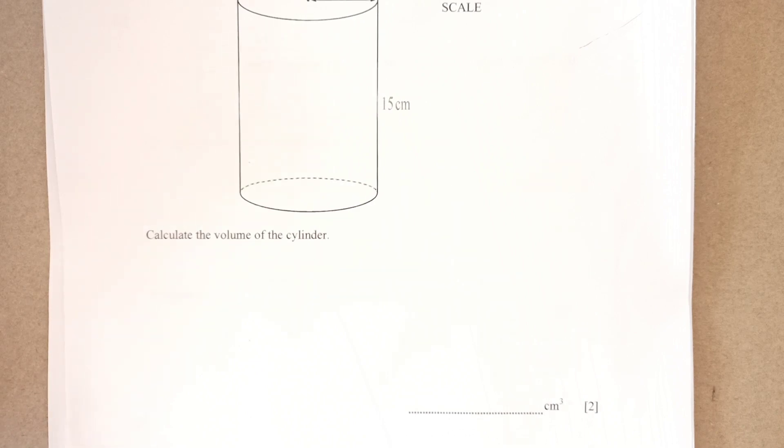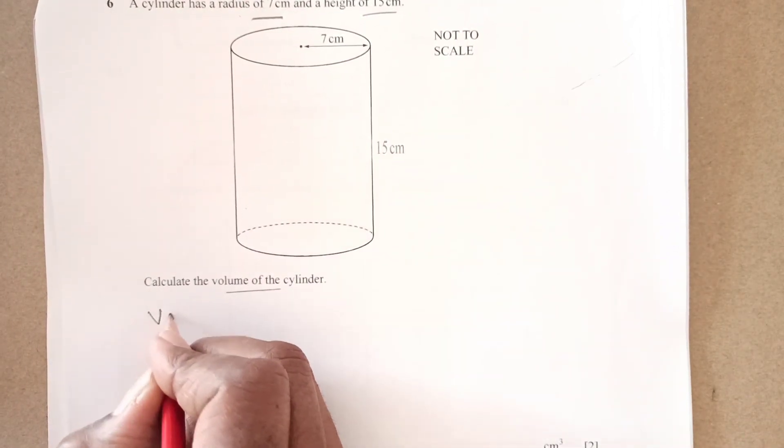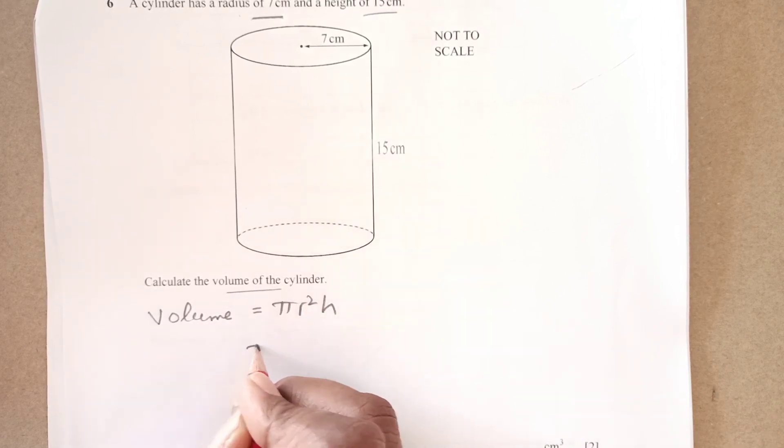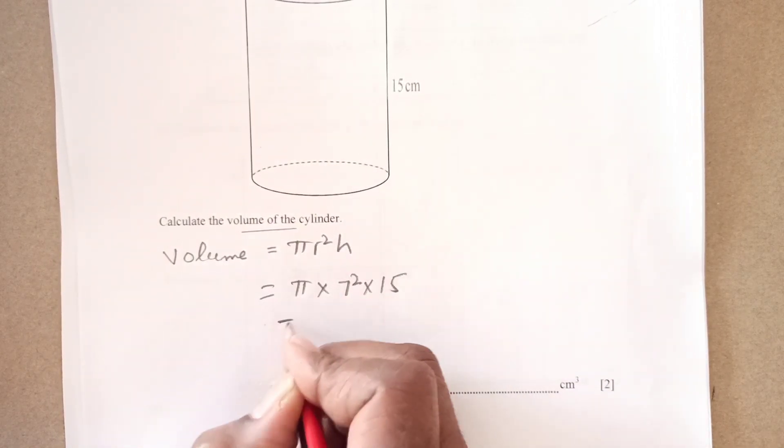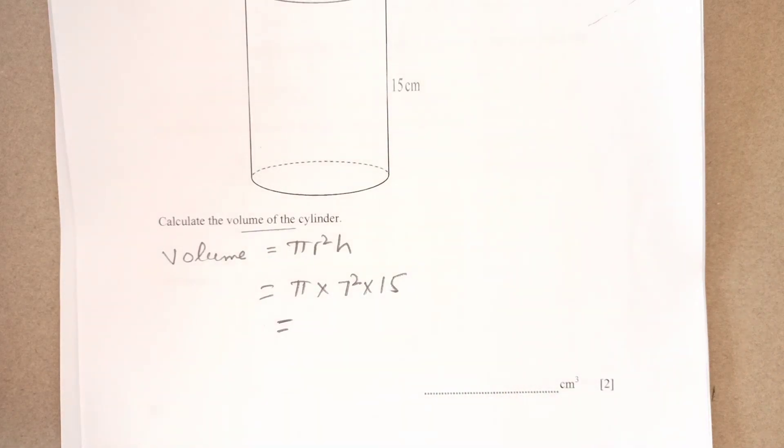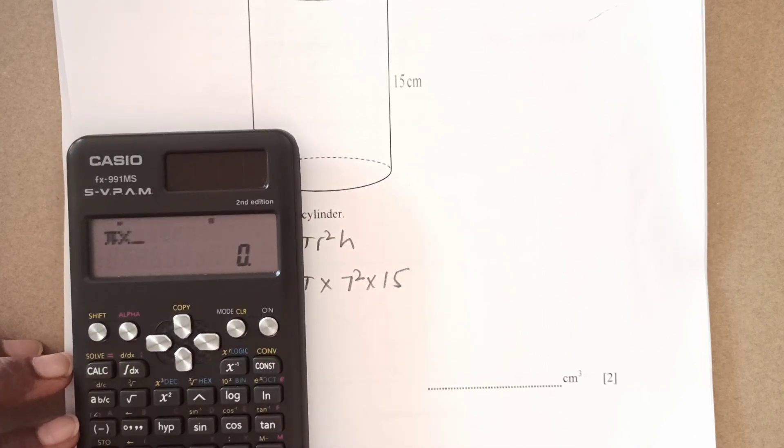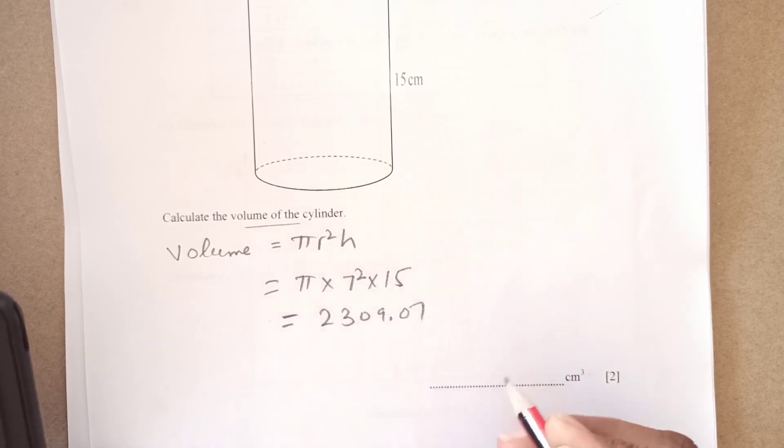Number 6 a cylinder has radius 7 centimeter height is 15. Calculate the volume. This is very direct question but you should know the formula. Formula of this cylinder is volume of cylinder is pi r squared h. pi and r r is 7 squared h is 15. Just use your calculator directly. Pi times 7 times 7 times 15. This is 2309.07. That is what we are going to write down in the answer.